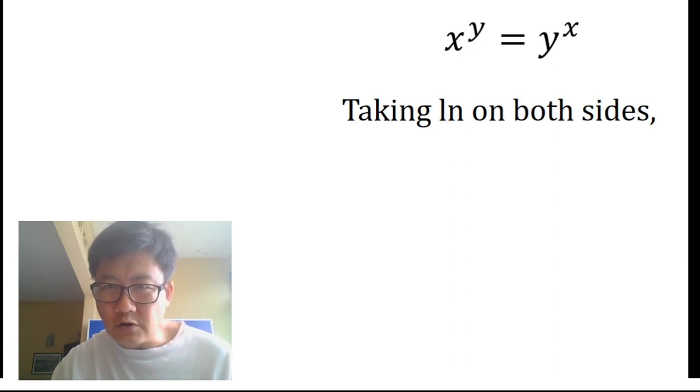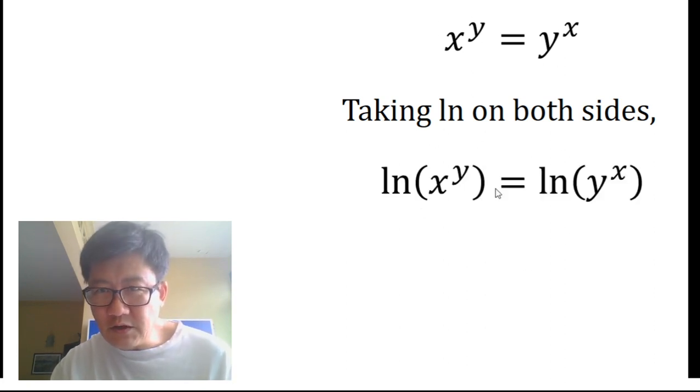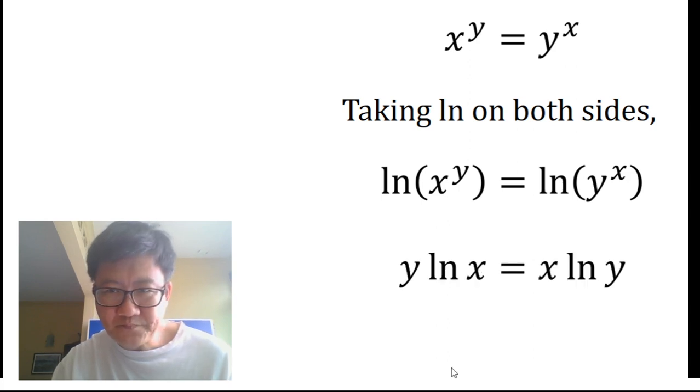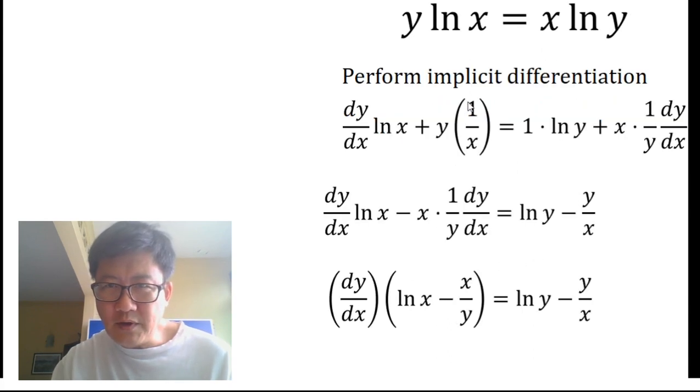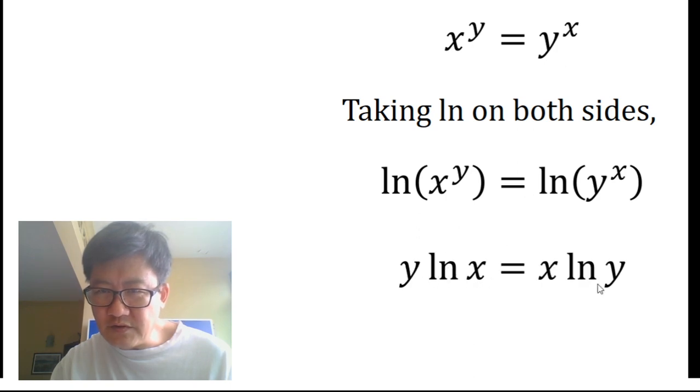...to take natural log on both sides. So when we do that, we get natural log of the left side equals natural log of the right side. After that, we bring down the y and we bring down the x. That's what happens here. Now once we've done that, we transfer this over here.